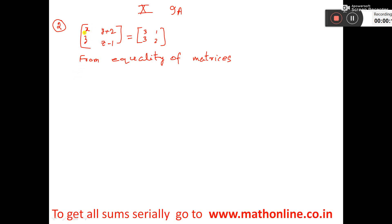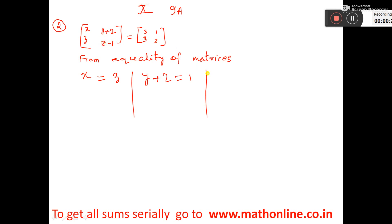That means x is equal to 3. Then we can write y plus 2 is equal to 1. Then we can write 3 is equal to 3, but we are not writing this one. z minus 1 is equal to 2.